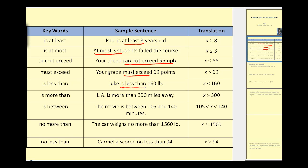Luke is less than 160 pounds, so x is less than 160. L.A. is more than 300 miles away, so x is greater than 300. A movie is between 105 and 140 minutes — that would be a compound inequality: 105 less than x less than 140. You can also read this as x is greater than 105 and x is less than 140.